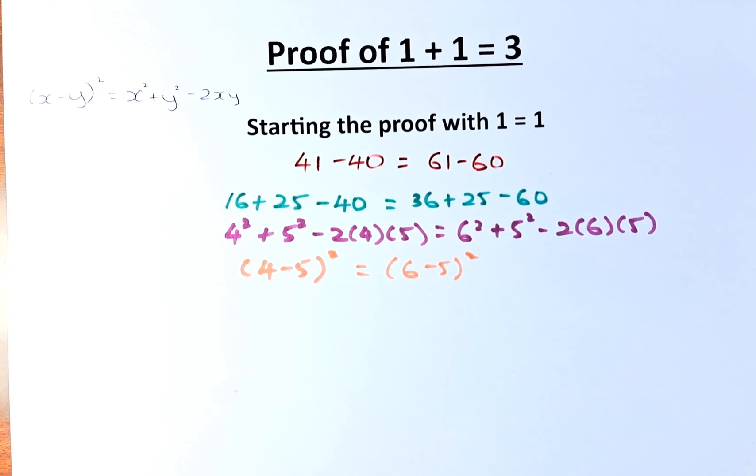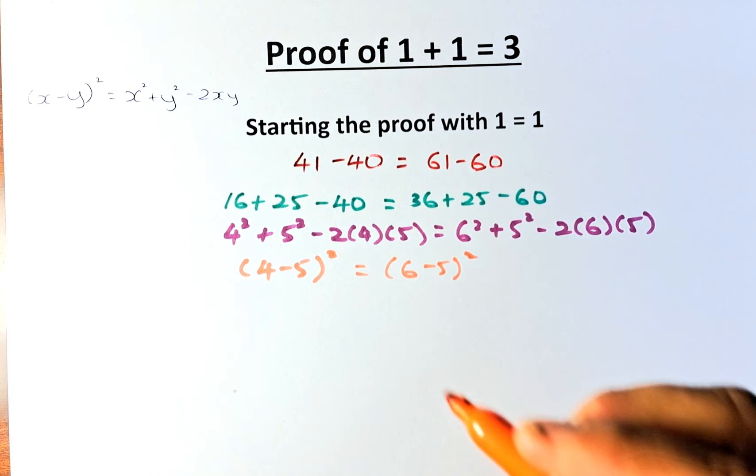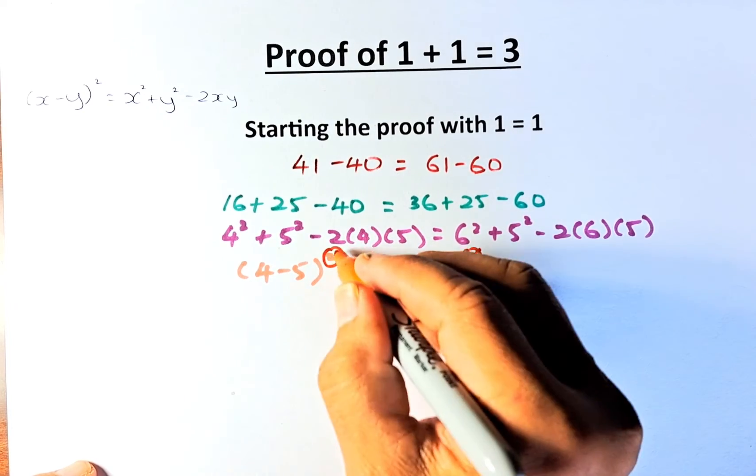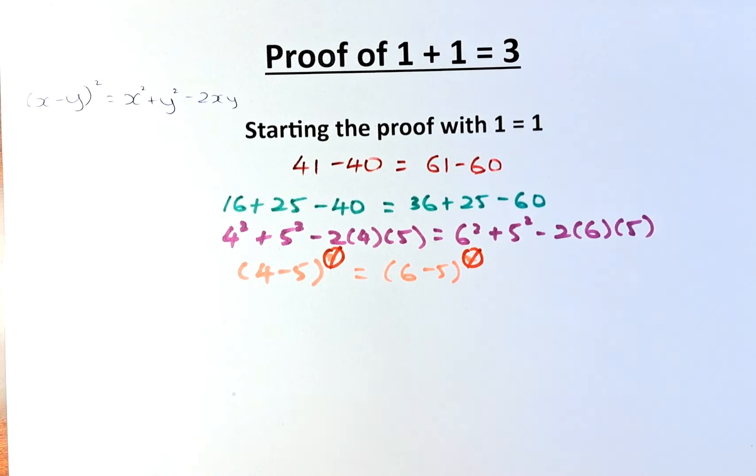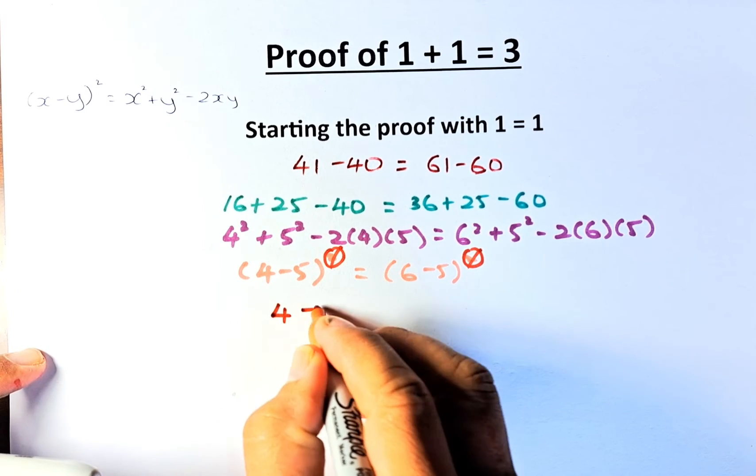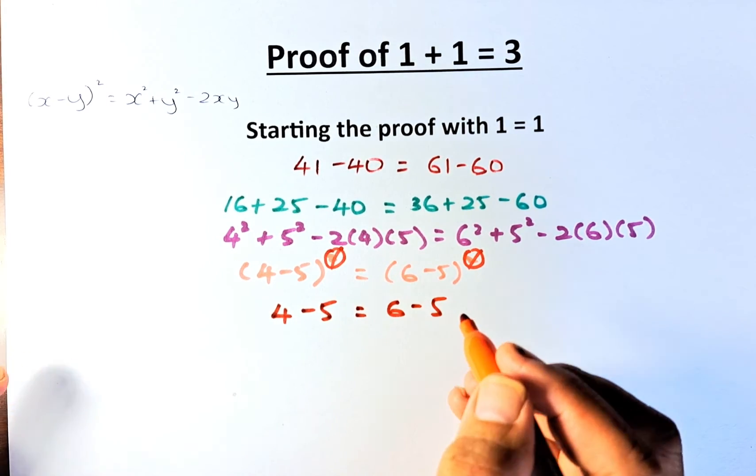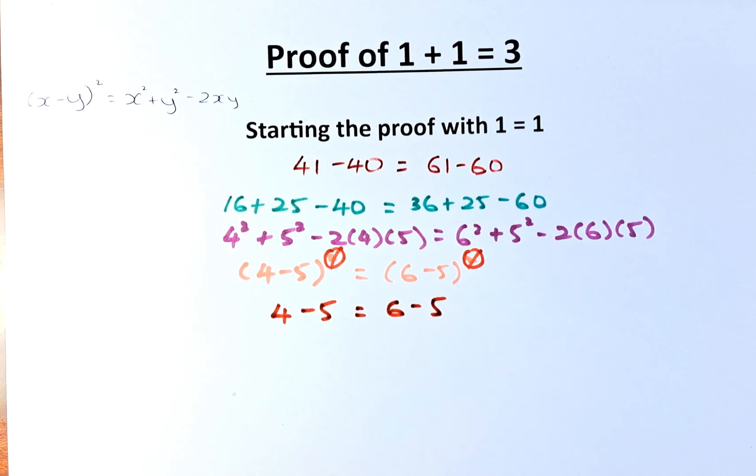4 minus 5 squared equals 6 minus 5 squared. So because the squares are the same, we can cancel them out. So we are left with 4 minus 5 equals 6 minus 5. Getting more interesting now.